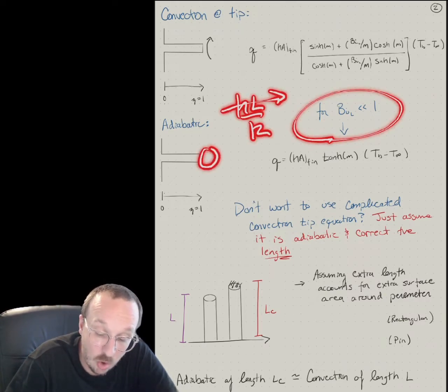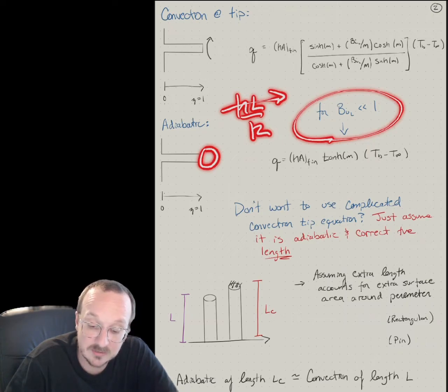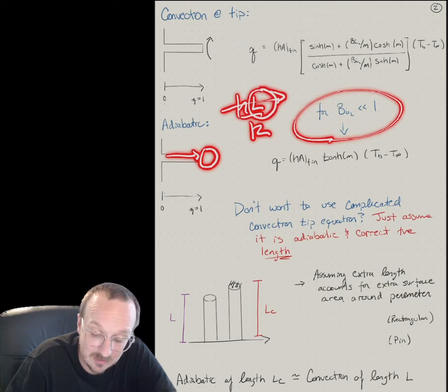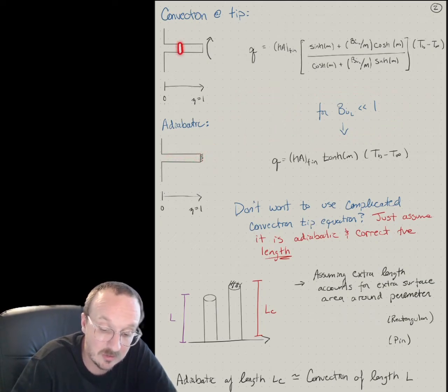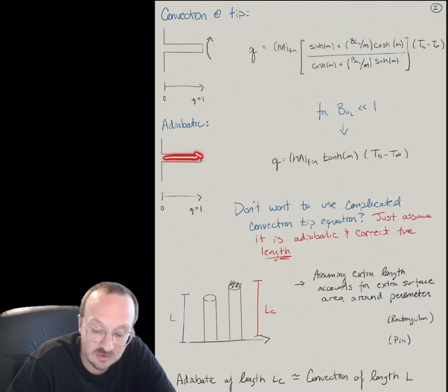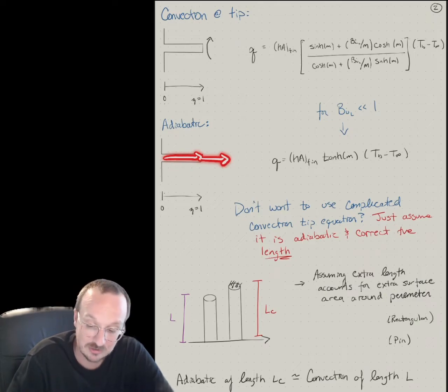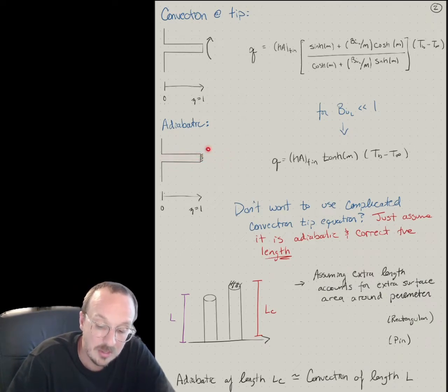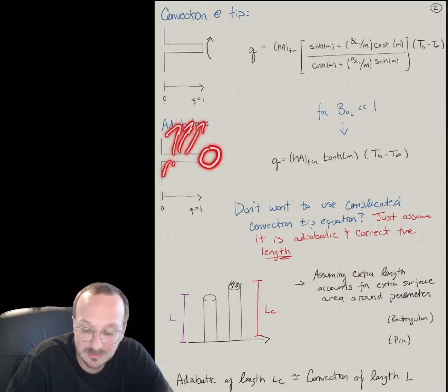We're talking about convection only at this tip relative to conduction down the fin, because you're talking about on this length scale L. It's not talking about on this length scale across. So this would be length scale T. But if you're talking about the ratio of conduction to convection in this direction, if that's really small, then you've lost all your heat along the length of the fin.